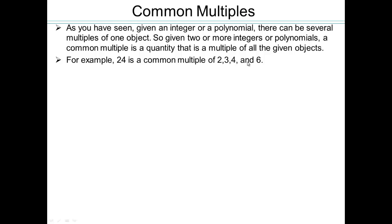So all of these have their multiples. The question is, can we find a multiple of all four of them at once? Can you find a number that is a multiple of 2, 3, 4, and 6? We're saying 24 is such a number, because 24 is 2 times 12, or 3 times 8, or 4 times 6, or 6 times 4. So 24 is a common multiple of 2, 3, 4, and 6.